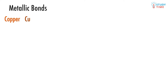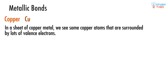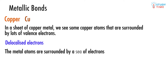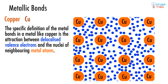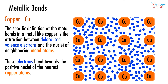Metallic bonds are very interesting things, and so are metals. In a sheet of copper metal, we see some copper atoms that are surrounded by lots and lots of valence electrons. These valence electrons are called delocalized electrons, because they're essentially free to move around the metal as they please. Sometimes we say that the metal atoms are cations surrounded by a sea of electrons. The specific definition of metallic bonds in a metal like copper is the attraction between the delocalized valence electrons and the nuclei of neighboring metal atoms. These electrons are attached to the positive nuclei of the nearest copper atoms, and that attraction is what a metallic bond is.